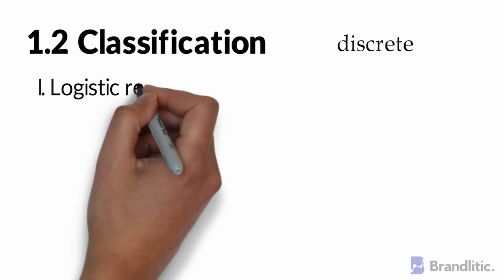Classification: With regression types being over, now let's jump to classification. So in classification, the output is discrete.